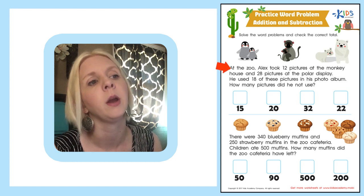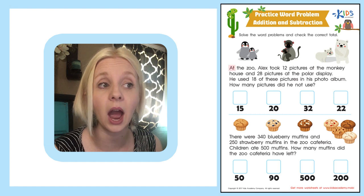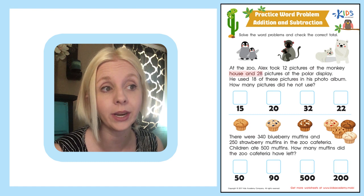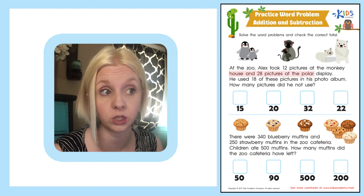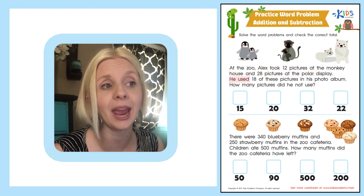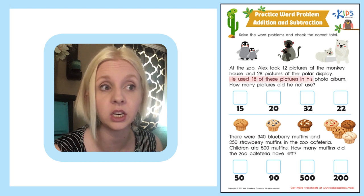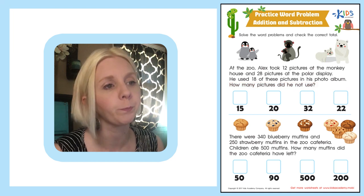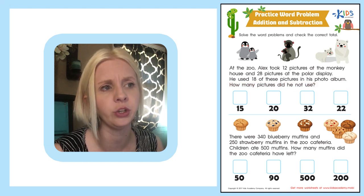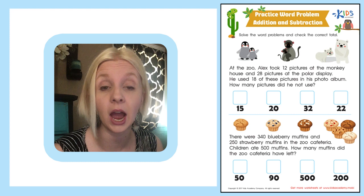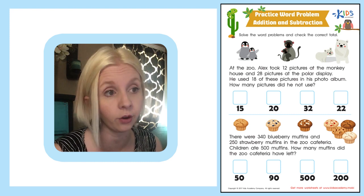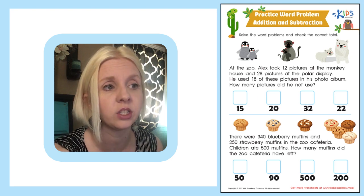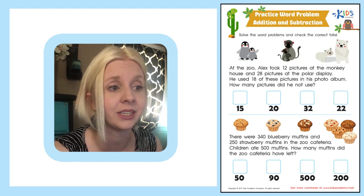Let's read through the first question. It says: at the zoo, Alex took 12 pictures at the monkey house and 28 pictures at the polar display. He used 18 of these pictures in his photo album. How many pictures did he not use? So what we need to do is determine how many pictures Alex took all together, and then subtract 18 to find out how many he did not use.